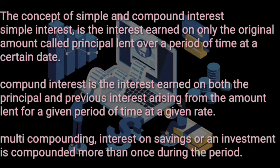For simple interest, interest is only earned on the principal — the original amount. For compound interest, it is earned on both the principal and the interest of the previous period. For multi-compounding, interest on savings or an investment is compounded more than once during that period.